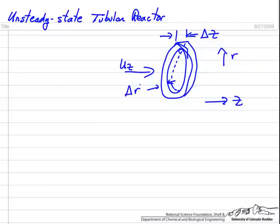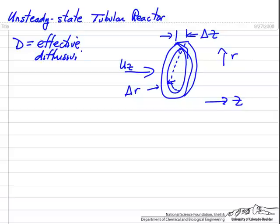The terms that are going to appear in the equation include D, which is not a diffusivity as we normally think of it, but we refer to it as an effective diffusivity. We're allowing for the possibility that we have a packed bed reactor where there's lots of mixing and turbulence, and that causes some dispersion — some gradient flow due to gradients.